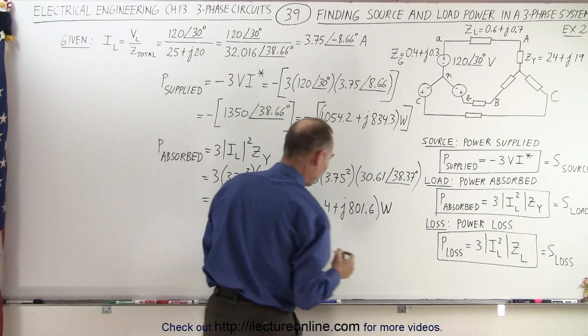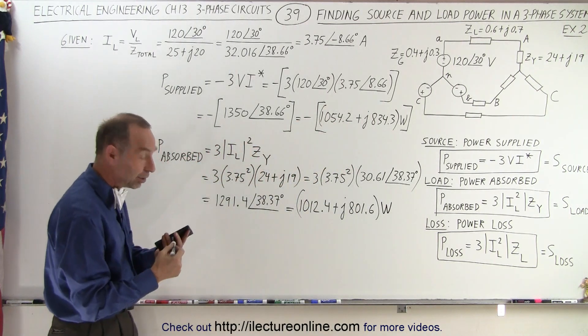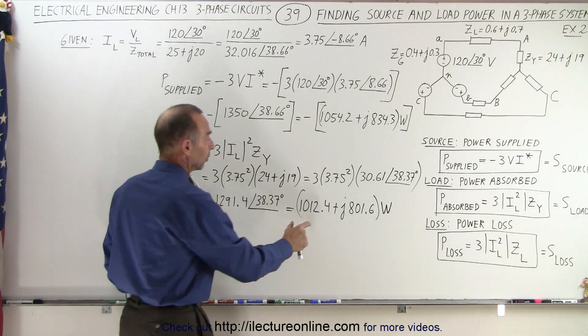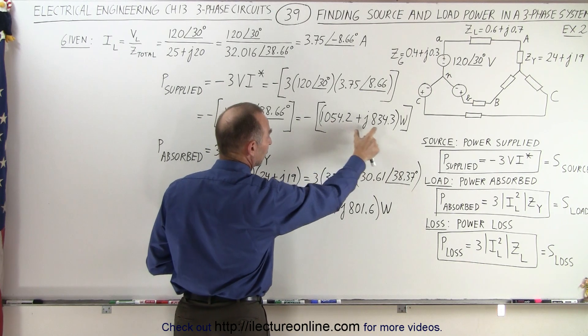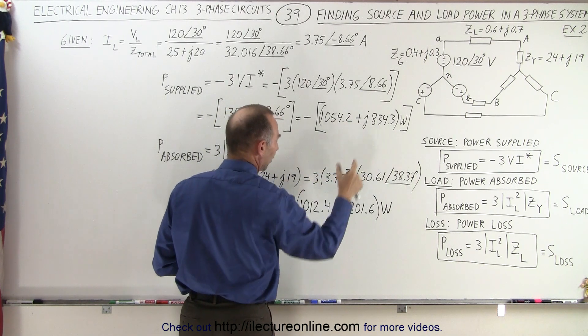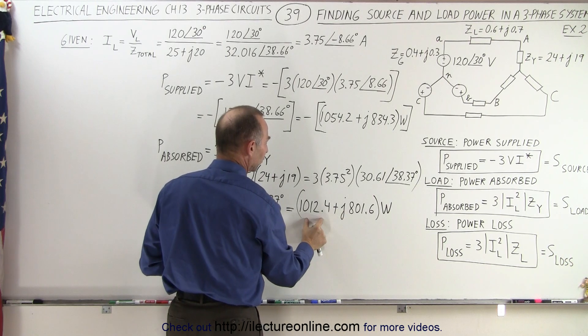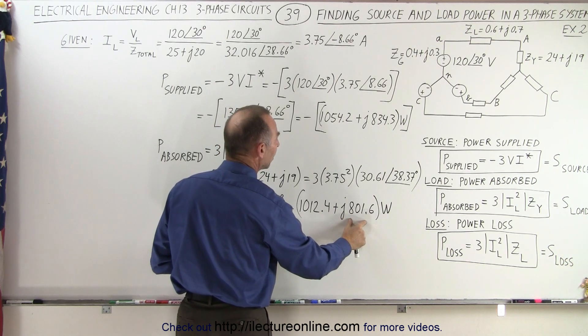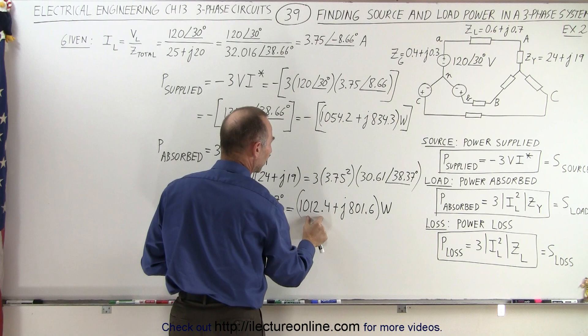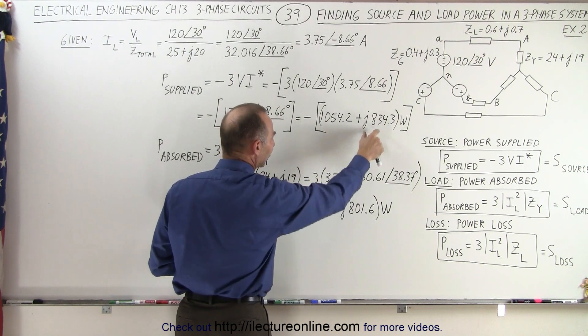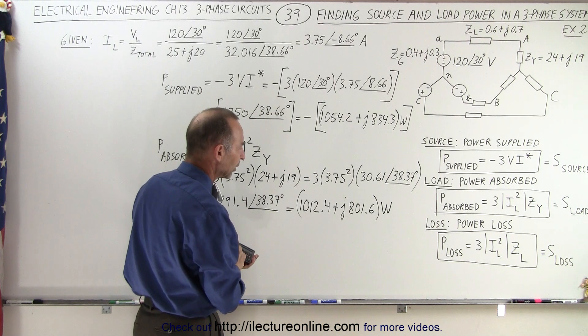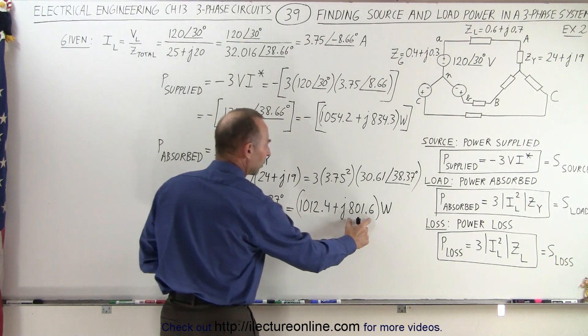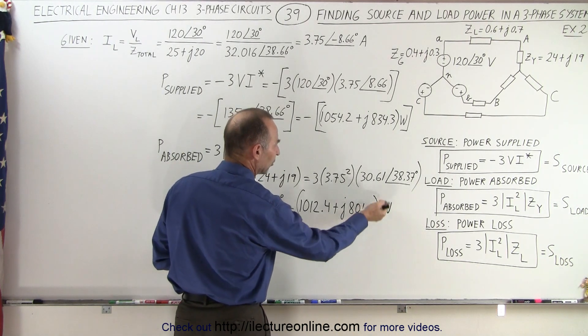So now take a look. Notice the amount of power provided is 1054.2 plus j834. Power absorbed by the load is 1012 plus j801. Notice slightly less power absorbed, the real power, and slightly less the imaginary part or the inductive part of the power absorbed.